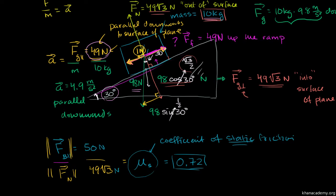We said we're going to keep applying a little bit more force until we can budge this block to start accelerating downwards. I kept applying a little bit more force until I got to 1 newton, and then the block started to budge. At that point when it started to budge, I'm applying this 1 newton, and there was already 49 newtons from the component of gravity in this direction. So combined, we're providing 50 newtons to just start budging it — to just overcome the force of friction.